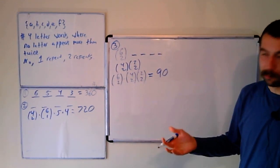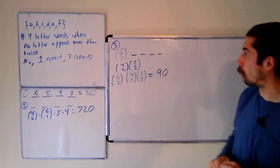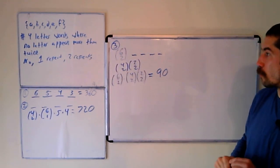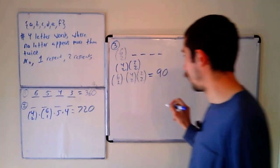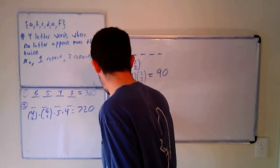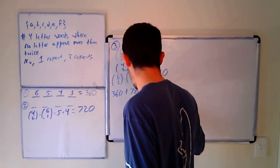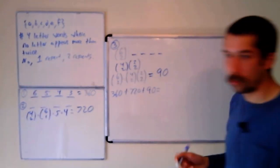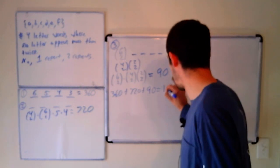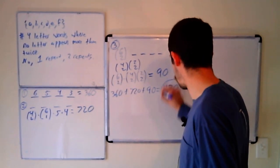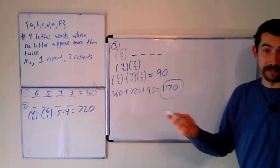And now we're done. So the total number of four-letter words where no letter appears more than twice is 360 plus 720 plus 90. Plug that into a calculator, and you get 1170. And that's it.